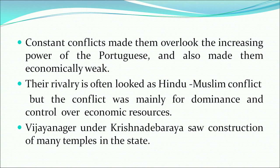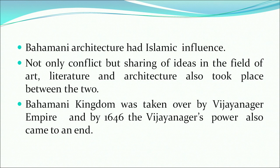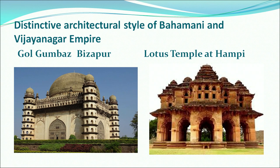The Vijayanagar Empire under Krishnadeva Raya saw the construction of many temples. Bahmani architecture had Islamic influence. Not only conflict, but sharing of ideas in the fields of art, literature, and architecture also took place between the two. The Bahmani Kingdom was eventually taken over, and by 1646 the Vijayanagar power also came to an end. Two notable examples of their architecture are the Lotus Temple at Hampi — today a World Heritage Site, a perfect example of Vijayanagar architecture — and the Gol Gumbaz at Bijapur, a fine example of Bahmani architecture.